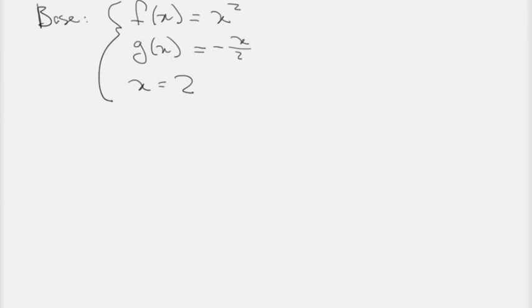So we're going to have the base of the solid that we're going to try to solve the volume for described by this system. We've got f(x) is the parabola x squared, g(x) is the line negative 1/2 x, and then the vertical line x equals 2.